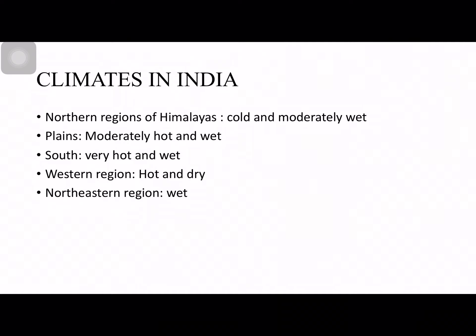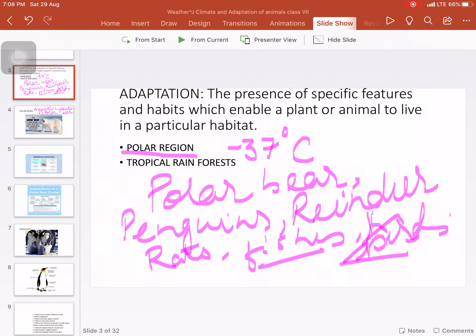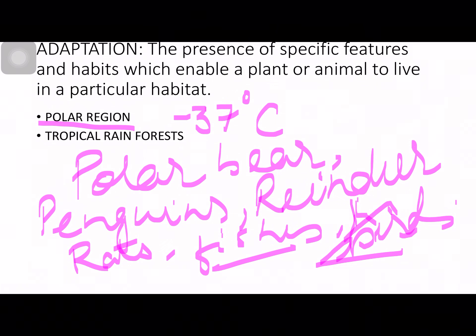Now, what is adaptation? Adaptation is the presence of specific features and habits which enable a plant or animal to live in a particular habitat. What is a habitat? Habitat is the dwelling place — in two words, it is the address, the niche, where the animals live. In this chapter we are going to discuss two regions where animals live: one is the polar region, and the other is the tropical rainforest.